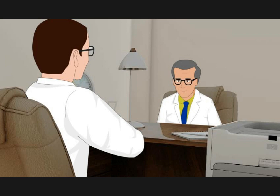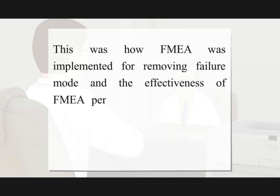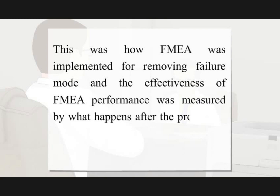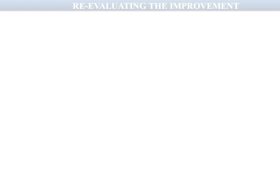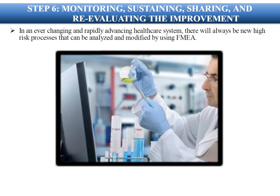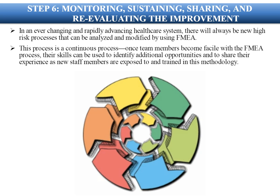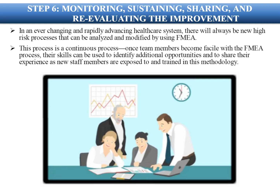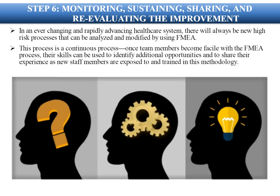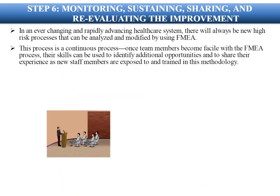This is how FMEA was implemented to remove failure modes. The effectiveness of FMEA performance was measured by what happens when the product or process goes live. Step 6 involves monitoring, sustaining, sharing, and re-evaluating the improvement. In an ever-changing and rapidly advancing healthcare system, there will always be new high-risk processes that can be analyzed and modified using FMEA. This is a continuous process, and once team members become skilled with FMEA, their experience can be shared with new staff trained in this methodology.